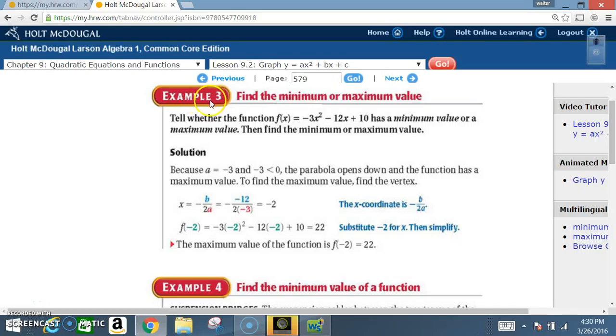Alright, now here in Example 3, find the minimum or maximum values. You actually already know how to do this based on Example 1. Tell whether the function f of x equals negative 3x squared minus 12x plus 10 has a minimum value or a maximum value, then find the minimum or maximum value.